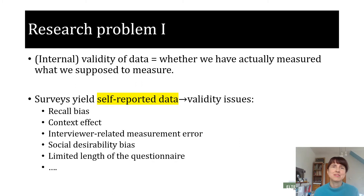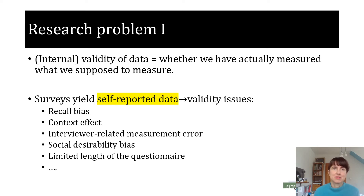In general, internal validity depends on whether we have actually measured what we're supposed to measure. Surveys collect self-reported data, which may cause validity issues discussed for a long time in the literature, like recall bias, context bias, and so on. Additionally, respondents try to answer questions in a manner that will be viewed favourably by others, which is called social desirability bias. Finally, survey questionnaires have a very serious length limit.